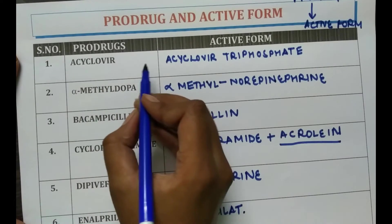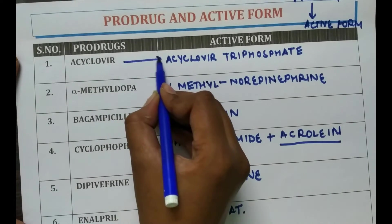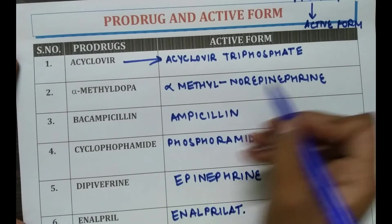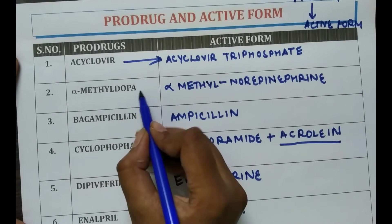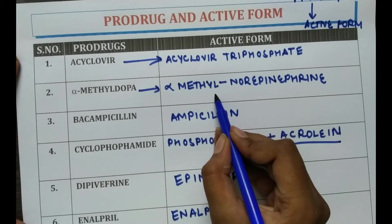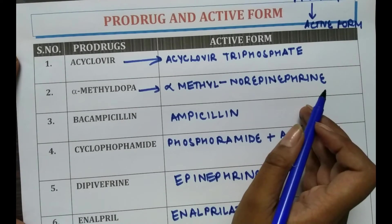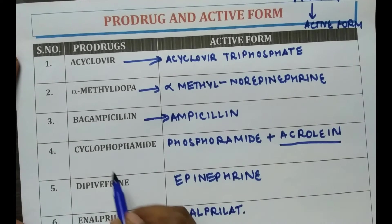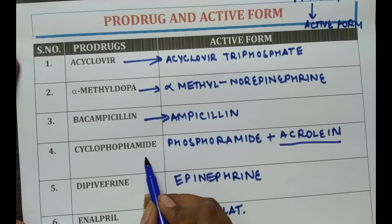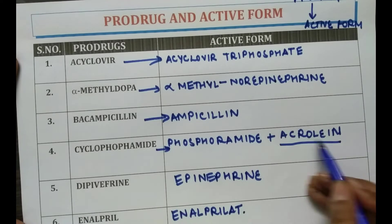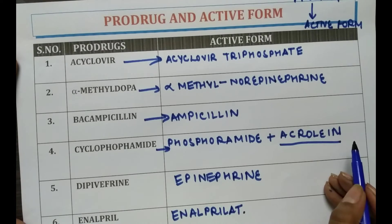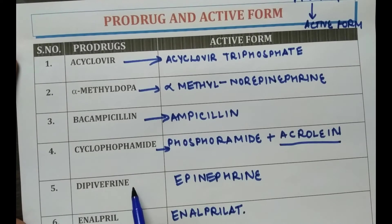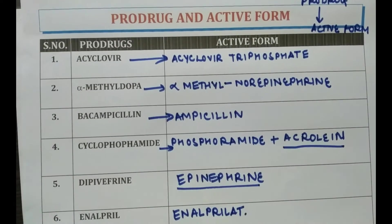To recap: Acyclovir is converted into acyclovir triphosphate. Alpha-methyldopa into alpha-methyl norepinephrine. Bacampicillin into ampicillin, cyclophosphamide into phosphoramide and acrolein. Dipivefrine into epinephrine. Enalapril into enalaprilate.